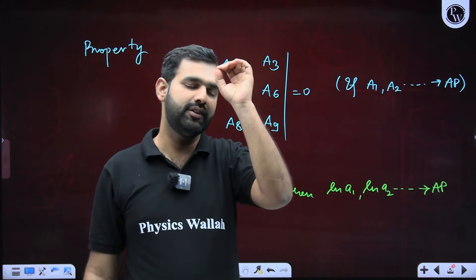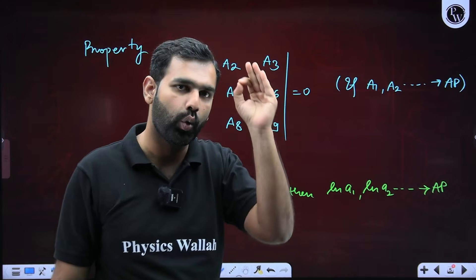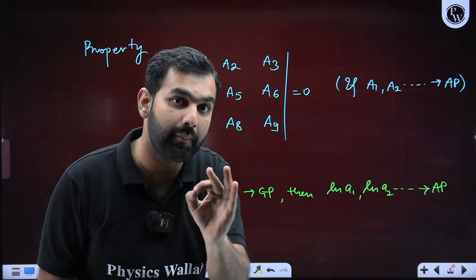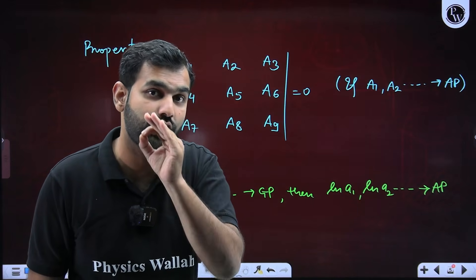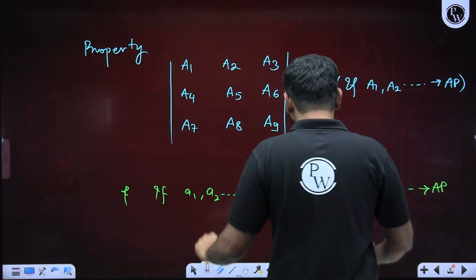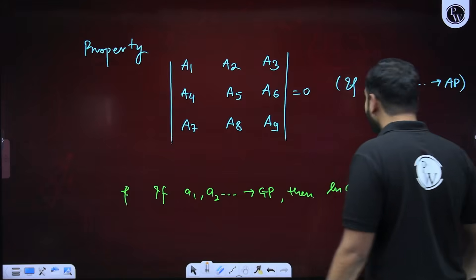Remember: if A1, A2, A3, ..., A9 are numbers written in a determinant in order, then that determinant will always be 0. Remember it as a fact, as a property, as a short trick. And remember one more trick: if A1, A2, A3 are in AP or GP, then their logarithms will be in AP. A determinant where terms in AP are written has value 0 — that's option D.